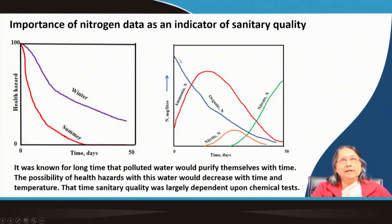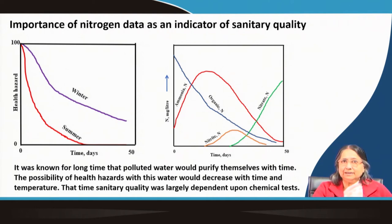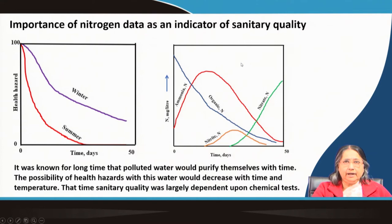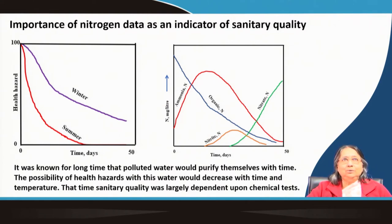Why does this happen? If you pollute with a protein molecule, it will first decompose to form ammonia — that is, organic nitrogen decreases and ammonia nitrogen increases. Then ammonia is converted to nitrite, and finally to nitrate, the highest oxidation state of nitrogen, in an aerobic environment. To understand what is happening, we must determine the different forms of nitrogen — that is the main objective.